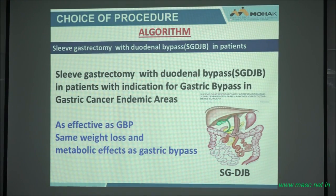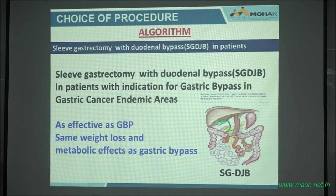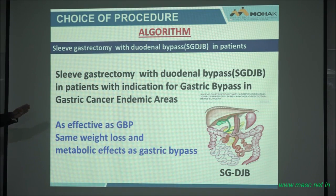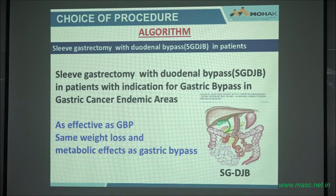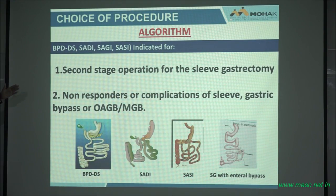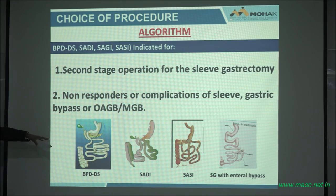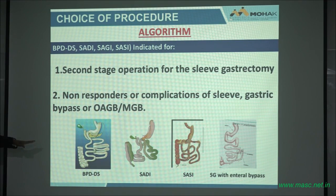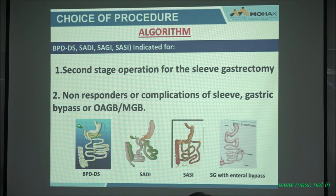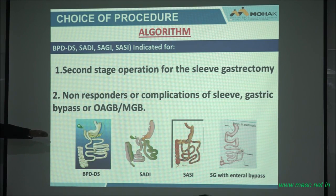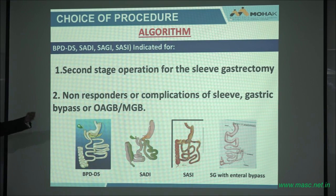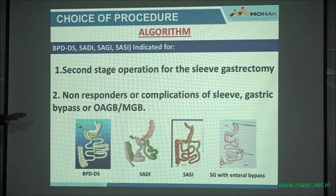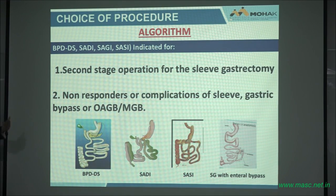If you have patients from an area where stomach cancer is endemic and you want to give them a gastric bypass, you have to consider that you don't want to leave any part of the stomach inaccessible for endoscopic evaluation. For patients needing a second operation after a failed sleeve, we have other operations that will increase the effectiveness. These are all procedures developed to address the failure of the sleeve — they add the incretin effect and some malabsorptive effect.